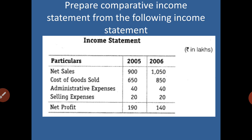We go through the items: net sales — two years' net sales are given. When we prepare the income statement, we deduct cost of goods sold to get gross profit. From gross profit, administrative expenses and selling expenses (operating expenses) are deducted to get operating profit. Here it is net profit as there are no other items.